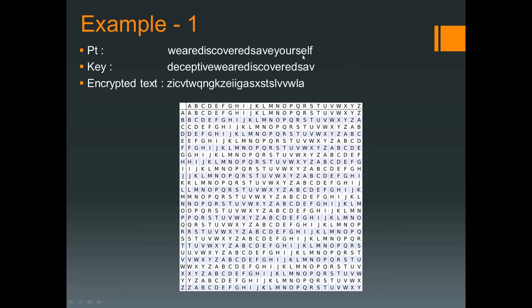For the second-to-last character, the plain text character is 'l' and the corresponding key character is 'a'. Find 'l' row-wise — l is here — and find 'a' column-wise — a is here. So we write 'l' as the second-to-last character of the encrypted text. For the last character and all remaining characters, you do the same thing to get the complete encrypted text.